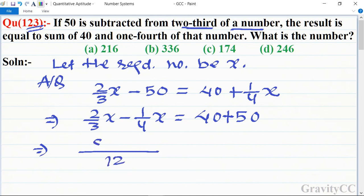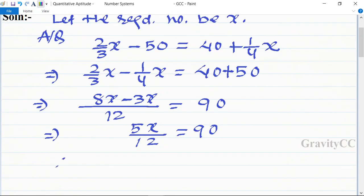8x minus 3x upon 12 is equal to 90. Implies that 5x upon 12 is equal to 90. Therefore x